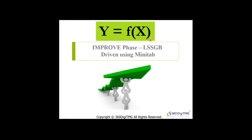Once we identify the critical inputs that are going to impact the output, we need to focus on improving those critical or vital inputs. In the Improve Phase, all we do is focus on improving the critical or vital inputs, and if we do that, the output will automatically improve. That is the rationale of the Improve Phase.